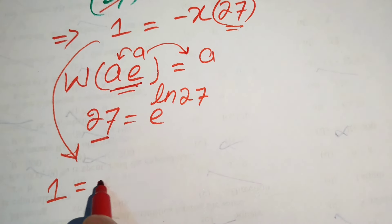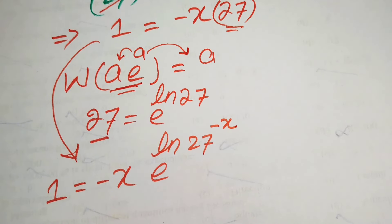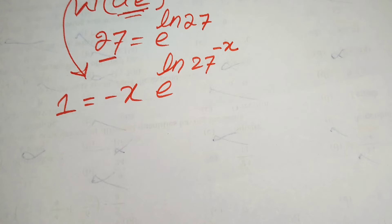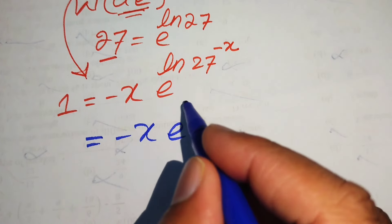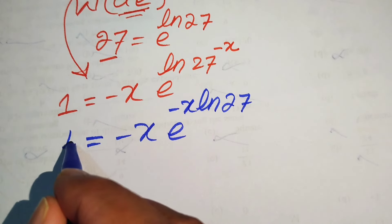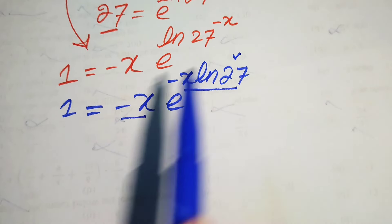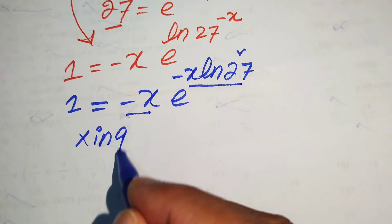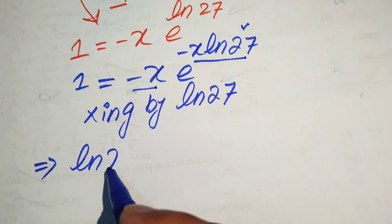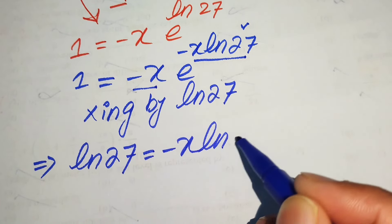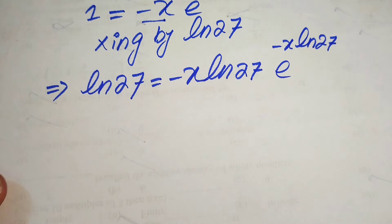We rewrite the equation as 1 equals minus x times e to the power of log 27, whole to the power of minus x. Using the log property, we bring minus x to the front, giving 1 equals minus x times e to the power of minus x log 27. Since the exponent of e contains minus x but we need the full factor, we multiply both sides by log 27, giving log 27 equals minus x log 27 times e to the power of minus x log 27.